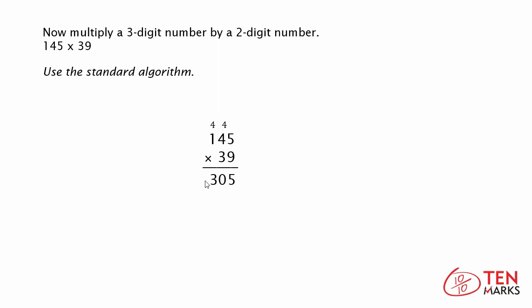Now you're going to move on and you're going to multiply 145 times 30. Keep in mind the 3 is in the tens place, so this 3 does not have a value of 3, it has a value of 30.